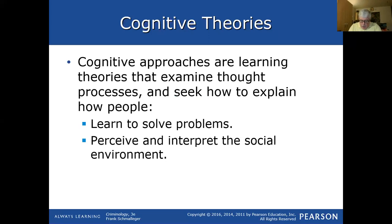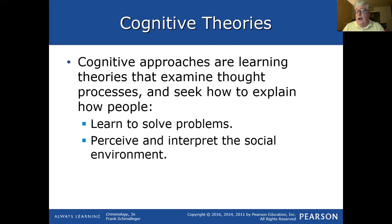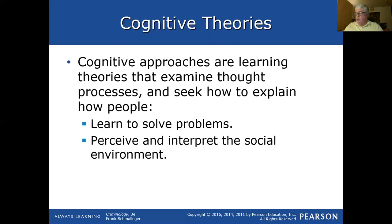Cognitive approaches also look at how we perceive and interpret our social environment. If I see two people running down a street, do I think they're out for exercise or that they just robbed somebody? It depends on how they're dressed, what they're doing while running, and what neighborhood we're in. We all perceive and interpret our social environments differently based upon what we've been exposed to over the years — what we've learned and how we've developed.